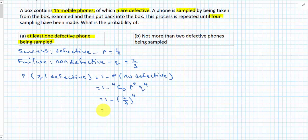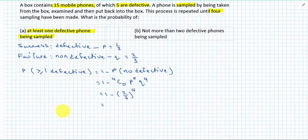The next one says not more than two defective phones being sampled. Not more than two. What does that mean? Zero is not more than two. One is not more than two. Two is not more than two. It's equal to two, but it's not more than two. So we're looking at zero, one, or two.